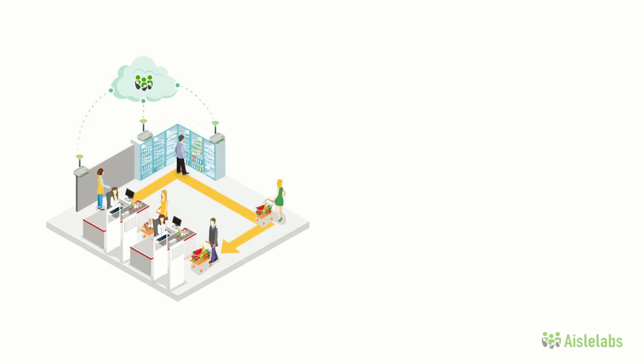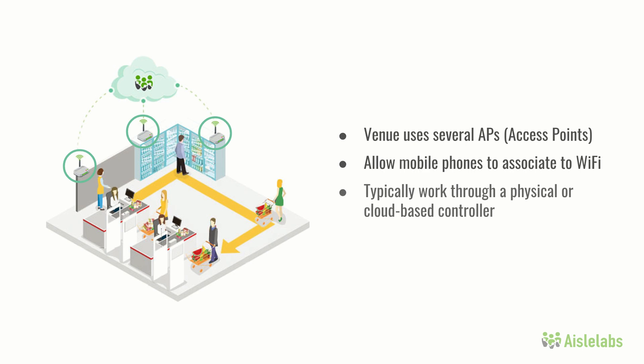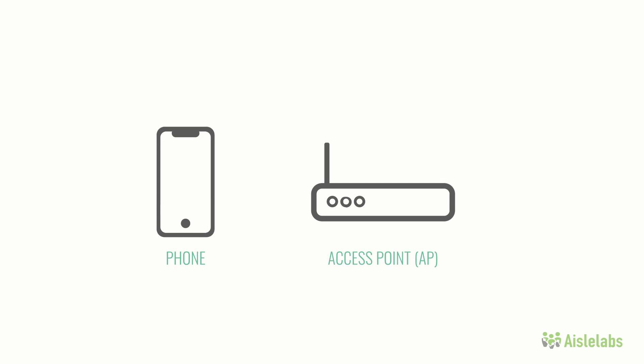How the entire system works is simple. A space will have one or more access points, or APs, which is a device that allows a mobile phone or laptop to associate to the wireless network. Access points typically work in conjunction with each other through a physical or a cloud-based controller. For the purposes of this video, we will use the term AP loosely to describe this system. First, the AP broadcasts the name of the Wi-Fi network, known as an SSID, which a mobile phone picks up and displays in their Wi-Fi settings.